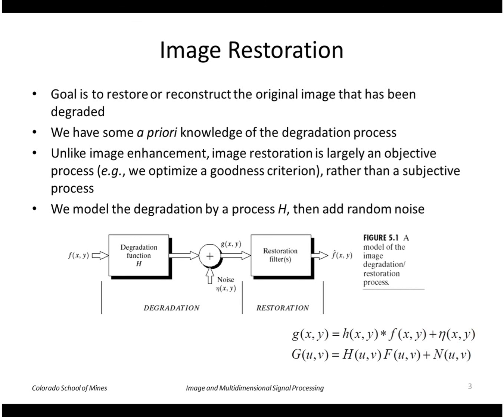Since convolution in the spatial domain is equivalent to multiplication in the frequency domain, you can also write this equation as: the Fourier transform of the degraded image equals the transform of the degradation function times the transform of the image, plus the transform of the noise.